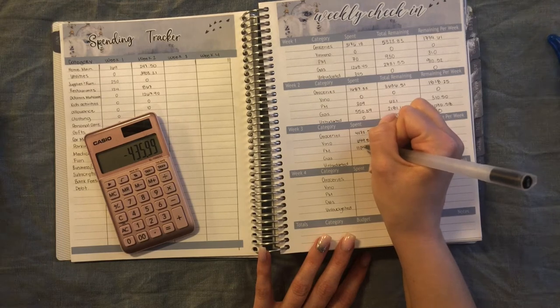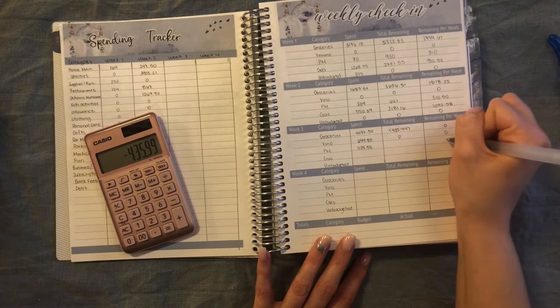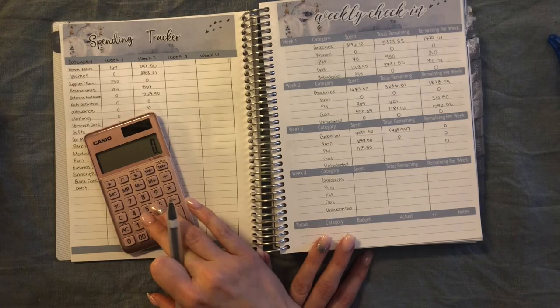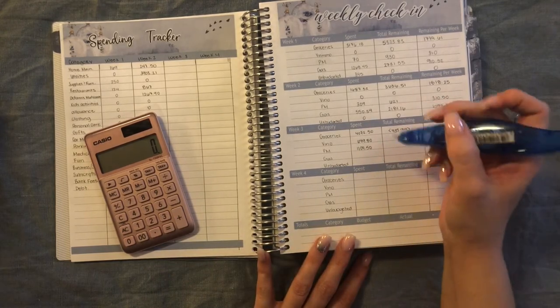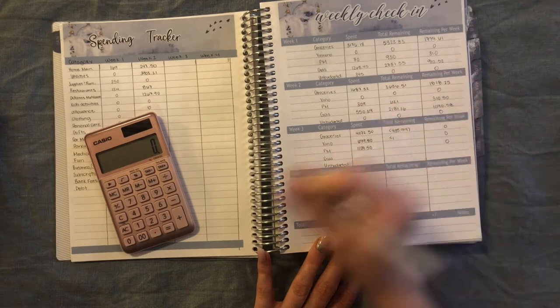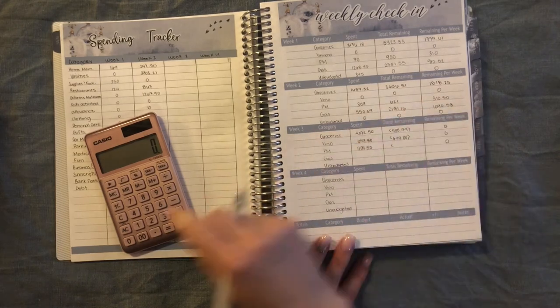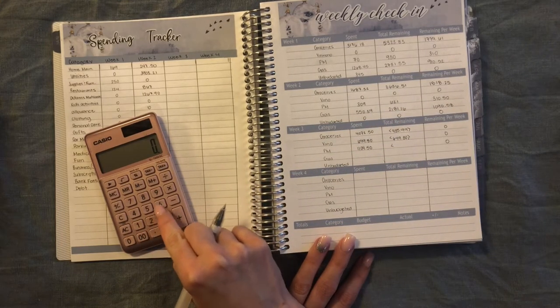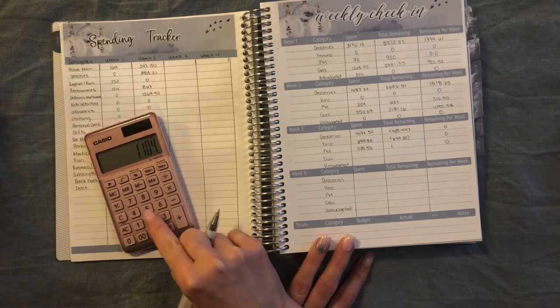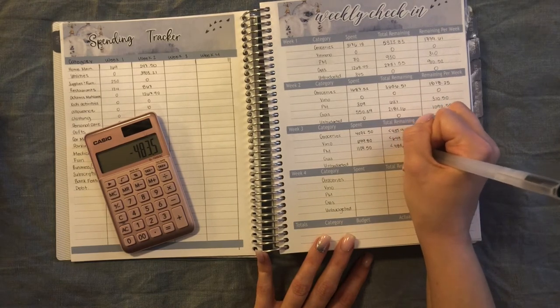For personal money, we spent $1,104.50, which means we're also over budget there. We were not expected to spend anything, so we are over budget here as well. We had $621 left, so we are negative $483.50.